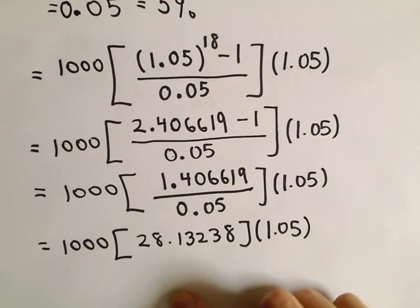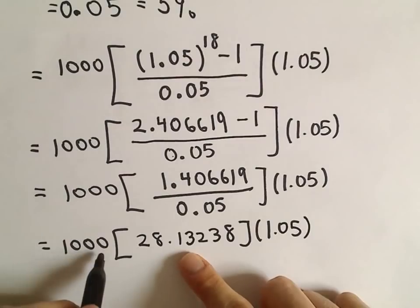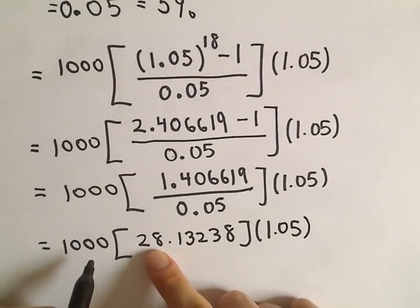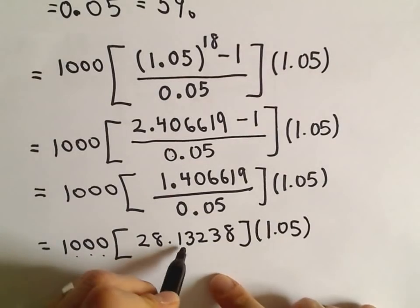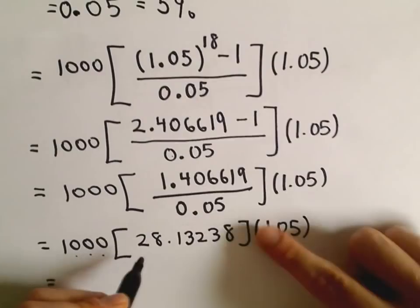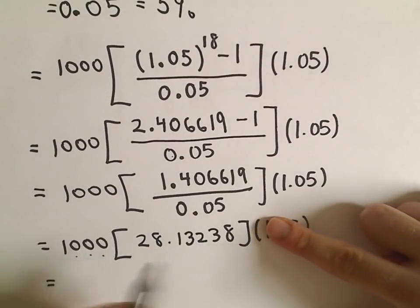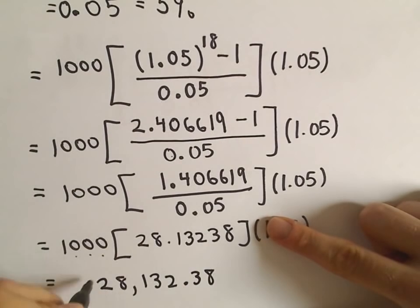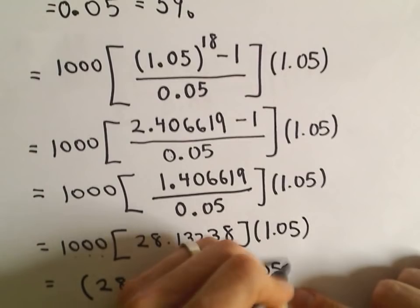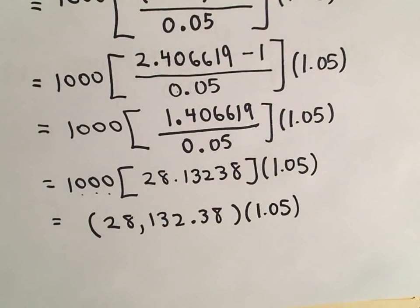And now I'm just going to multiply my numbers together. So if I take 1,000 and multiply it by 28.13238, that's going to give me 28,132.38. And now we're going to multiply that by 1.05. So again, you can kind of see where it's important to use more decimal places versus less.